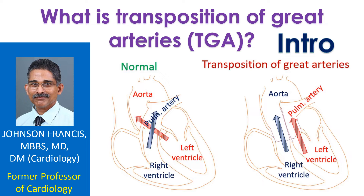The left ventricle is the left lower chamber of the heart, and the aorta is the largest blood vessel carrying oxygenated blood to the whole body. The pulmonary artery carries blood from the right ventricle to the lungs for oxygenation.